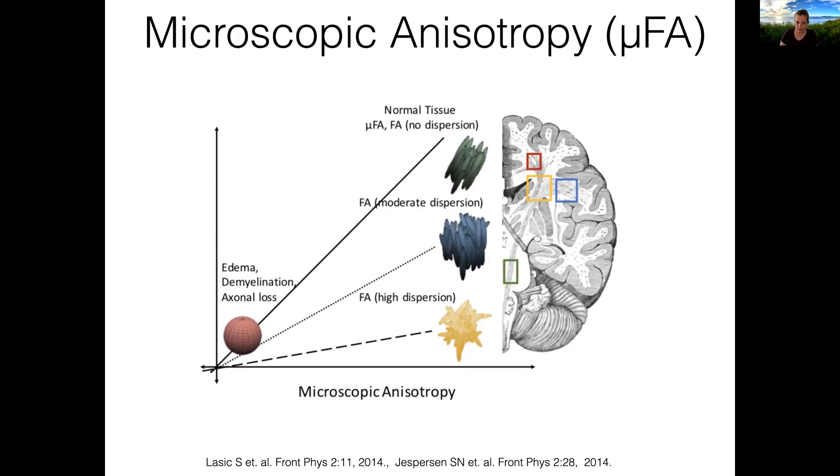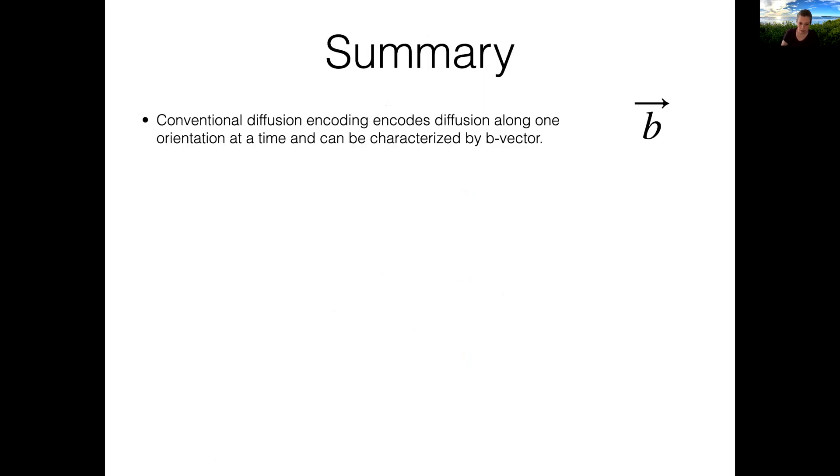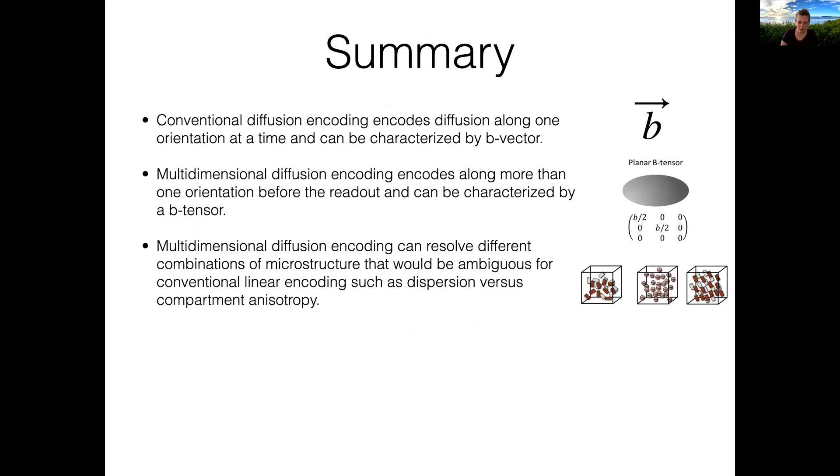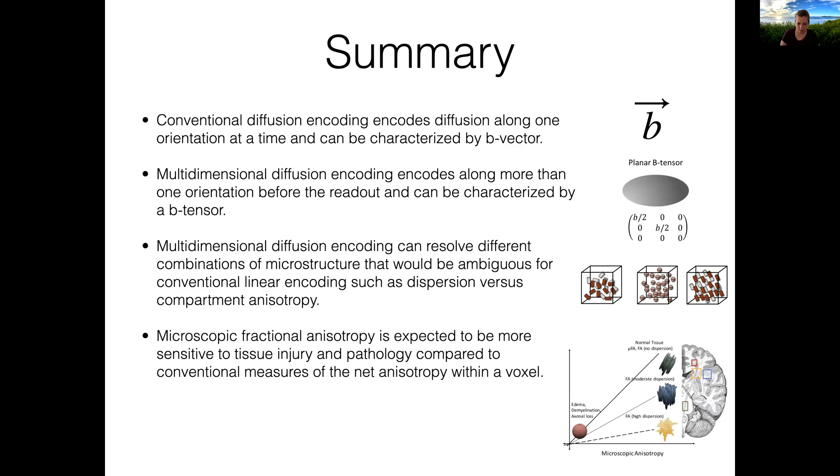In summary, conventional diffusion encoding encodes diffusion along one orientation at a time and can be characterized by a b-vector. Multidimensional diffusion encoding encodes along more than one orientation before the readout and can be characterized by a b-tensor. Multidimensional diffusion encoding can resolve different combinations of microstructure that would be ambiguous for linear encoding, such as dispersion versus compartment anisotropy. Microscopic fractional anisotropy is expected to be more sensitive to tissue injury and pathology compared to conventional measures of the net anisotropy within a voxel. And that concludes part one.